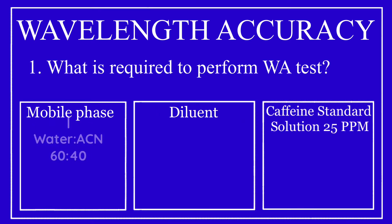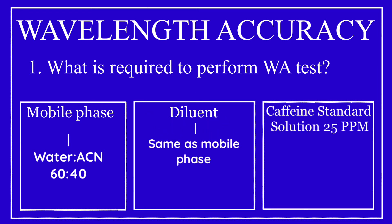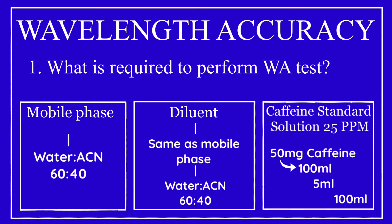Mobile phase is prepared using water and acetonitrile in the ratio of 60 to 40. Diluent composition is also the same as the mobile phase, consisting of water and acetonitrile in the ratio of 60 to 40. A 25 ppm caffeine standard solution is used to perform the wavelength accuracy test. You can prepare it by taking 50 milligrams of caffeine standard, dissolving it in 100 ml of volumetric flask with diluent, then taking 5 ml from this stock and diluting it to 100 ml with diluent — this gives you the 25 ppm caffeine solution.